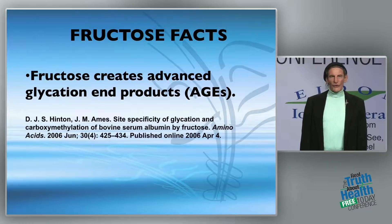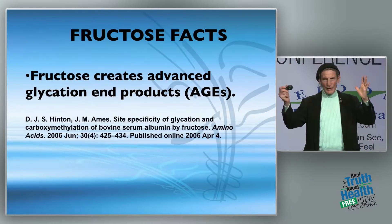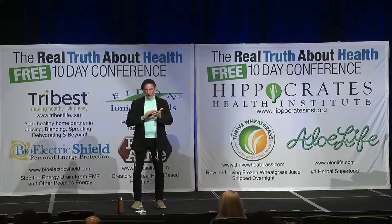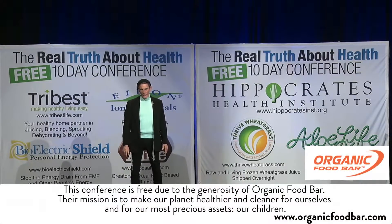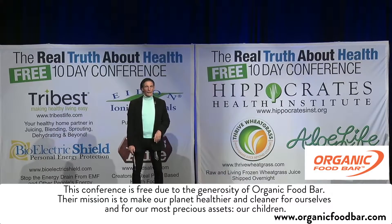Fructose also creates glycation products. What happens is glucose or fructose binds unnaturally with protein and deactivates it — that includes DNA and hemoglobin. That's actually how we measure diabetes in one of the key tests, because it greatly accelerates the glycation process.